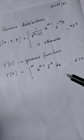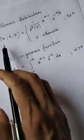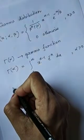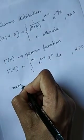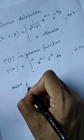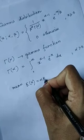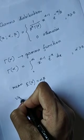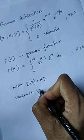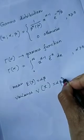If you use the mean and variance formula for this PDF, then you will get the mean of the gamma distribution as E(x) equals alpha times beta, and the variance V(x) equals alpha times beta squared.